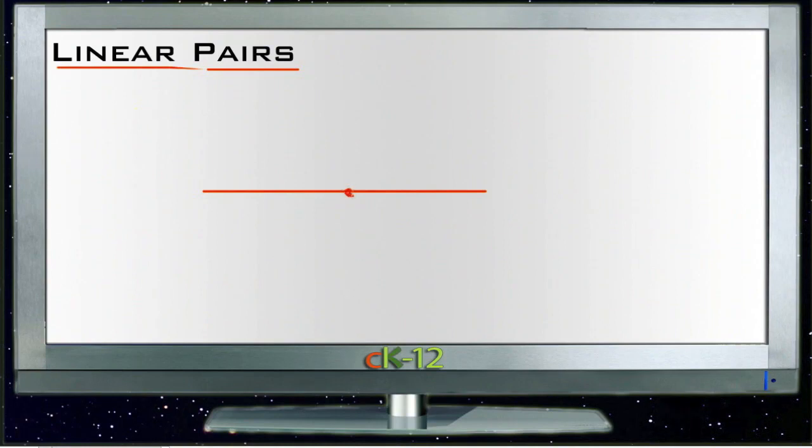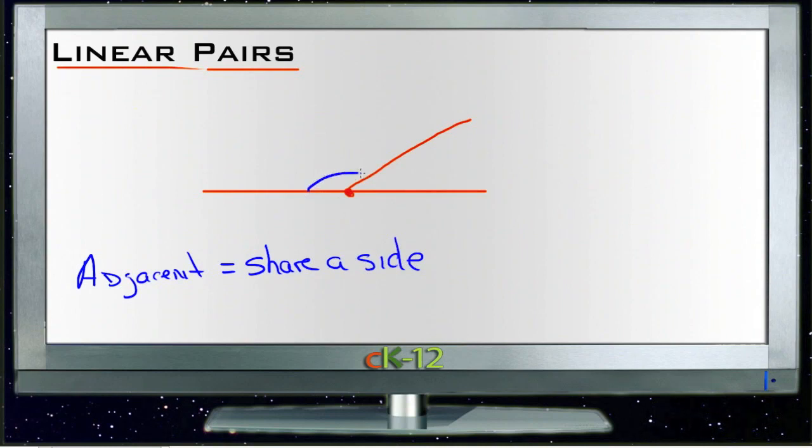A 180-degree angle is also called a straight angle. If we have any two angles here that are adjacent, adjacent specifically means that they share a side. So two angles that share one side. We have angle, call this angle A.